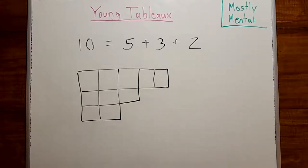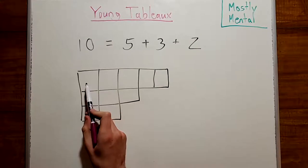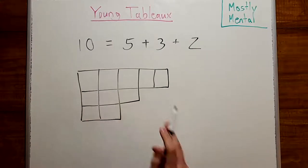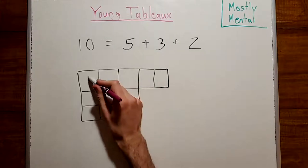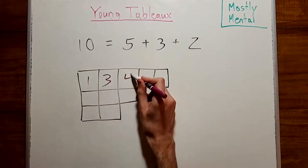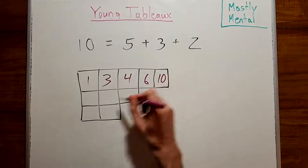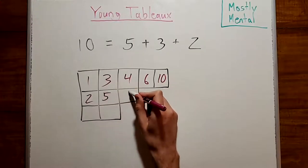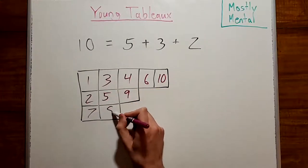A Young Tableau is what we get when we fill the boxes with the numbers 1 through n with the constraint that each number is smaller than everything below it and to its right. So, for example, we might fill this to get 1, 3, 4, 6, 10, 2, 5, 9, 7, 8.